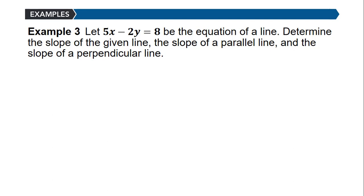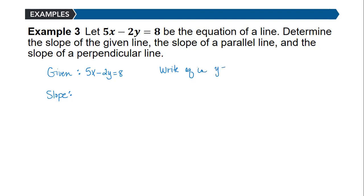In Example 3, we have the equation 5x minus 2y equals 8. We want to find the slope of this line, the slope of a parallel line, and the slope of a perpendicular line. Recall that we can write the equation in slope-intercept form y equals mx plus b to find the slope.